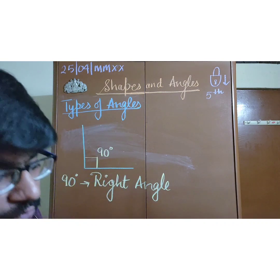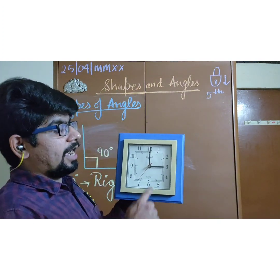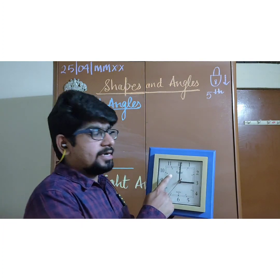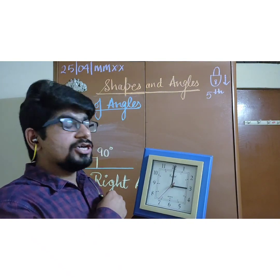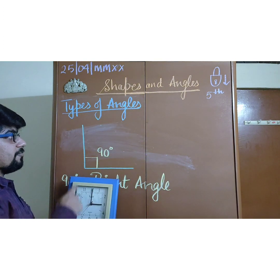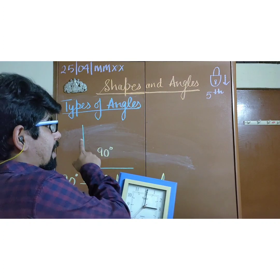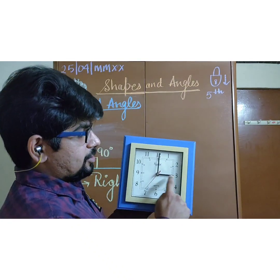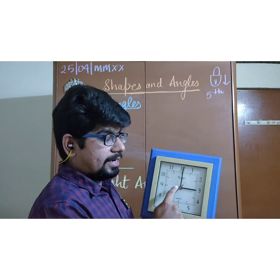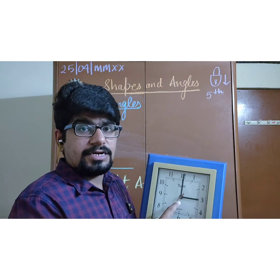Let us see where we can find this kind of angle in our surroundings. Here I am taking a wall clock. The hour hand is on 3 and the minute hand is on 12, so the time is 3 o'clock. The hands of the clock are representing the arms of an angle. The minute hand is standing straight on the hour hand, so they are making an angle of 90 degrees — that means this is a right angle.